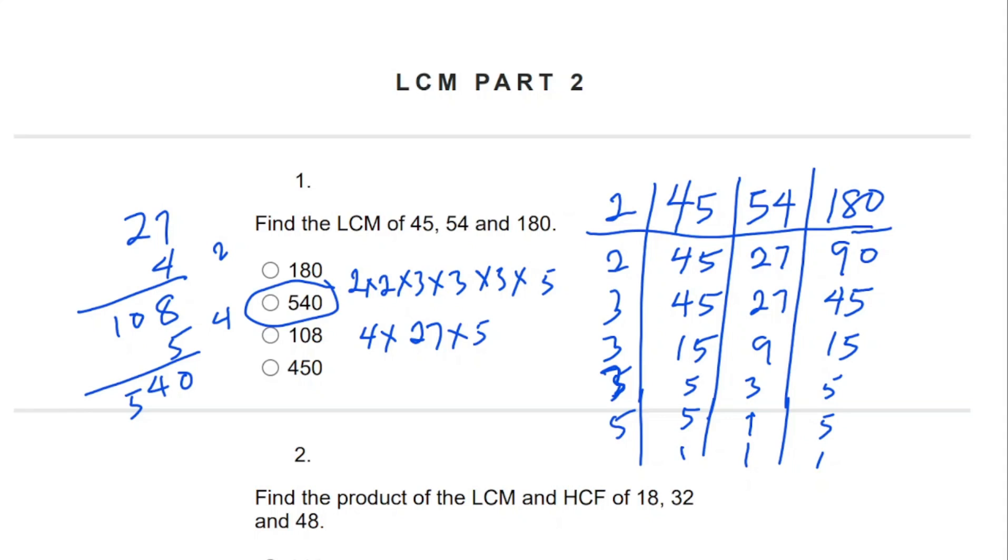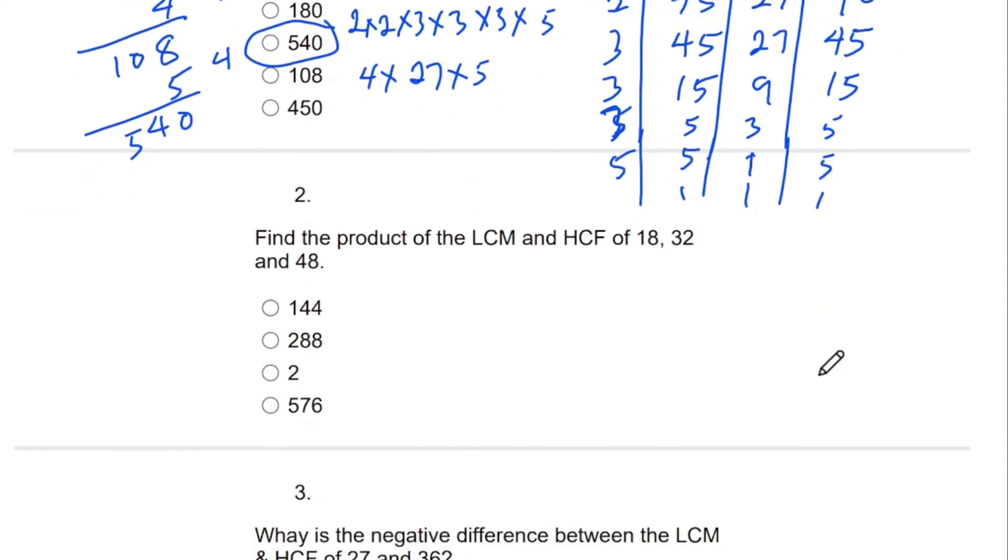The next question is: find the product of the LCM and HCF of 18, 32, and 48. Since we're going to find the HCF, we also find the LCM. We'll start with HCF first using the same method. We have 18, 32, and 48.